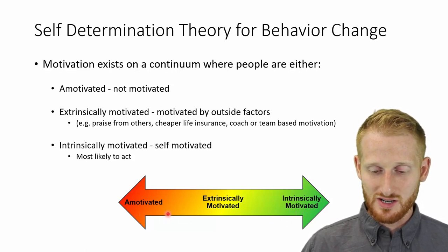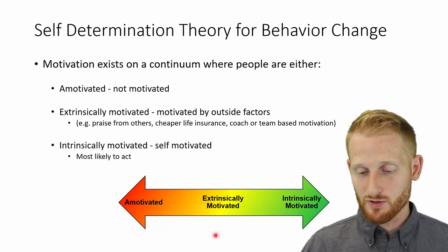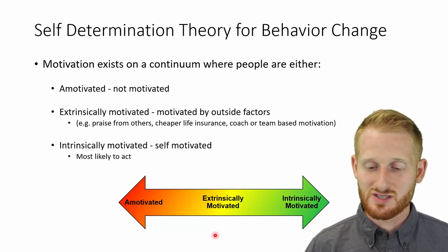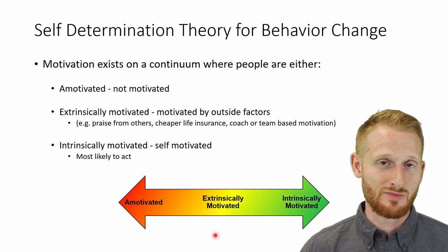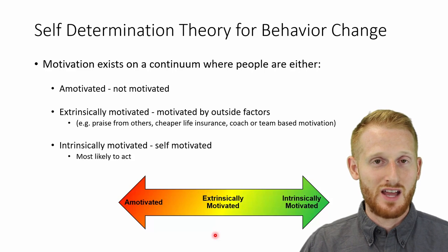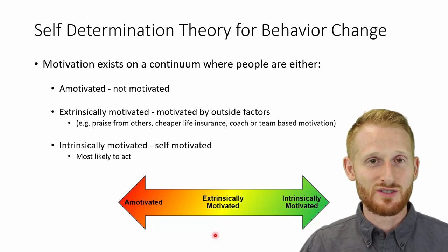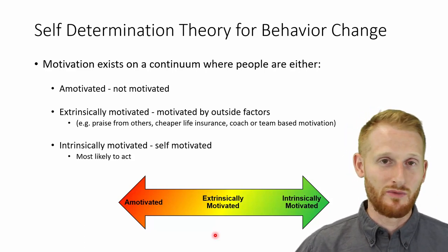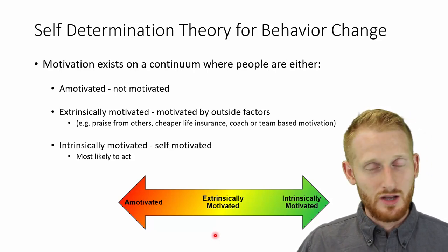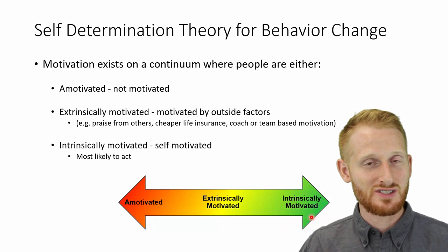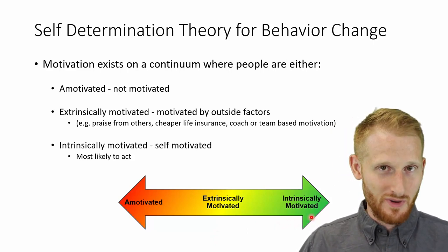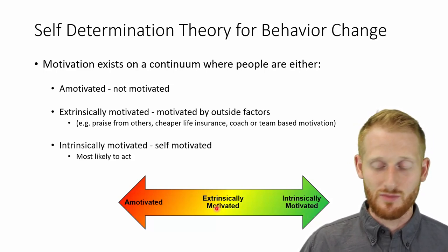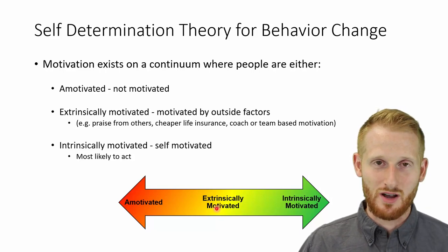You can help somebody move along the motivation spectrum through proper education — telling them the benefits they can get from exercise, eating properly, or stopping smoking. You can make it easier by helping them find barriers to change and ways around them. You can do a lot to push them toward intrinsic motivation. However, somebody is not going to simply go in that direction because you force them to — that's more extrinsic motivation, and it sometimes works but often doesn't.